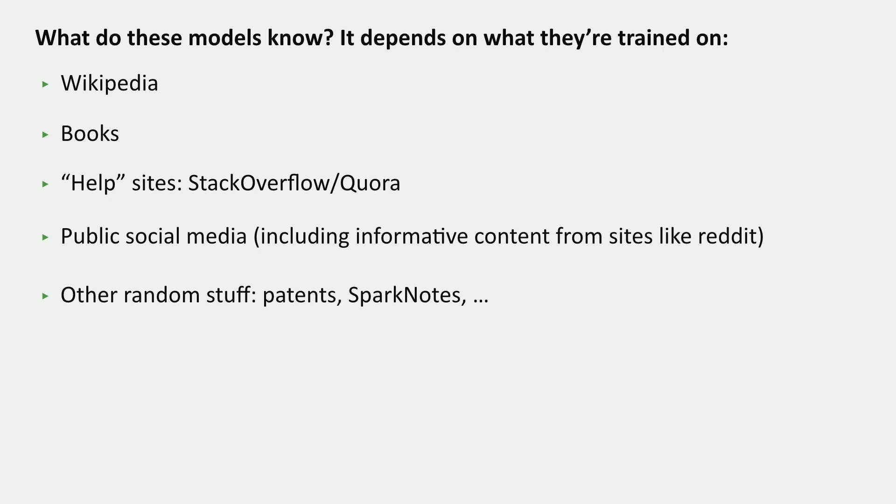Part of how we can reason about it is to think about what these models are trained on. One of the big sources of data is Wikipedia, so if a fact is in Wikipedia, these models are more likely to know it. They've also been trained on a lot of books, though we don't know exactly which ones. They've been trained on sites like Stack Overflow and Quora, where people ask questions and get answers. If it's a common question, maybe the model has seen the answer before. Things like public social media — certain places on Reddit that have relatively informative content — and a whole bunch of other random stuff that's out there. It's very hard to understand and audit, and there are a lot of researchers trying to think about ways of doing this.